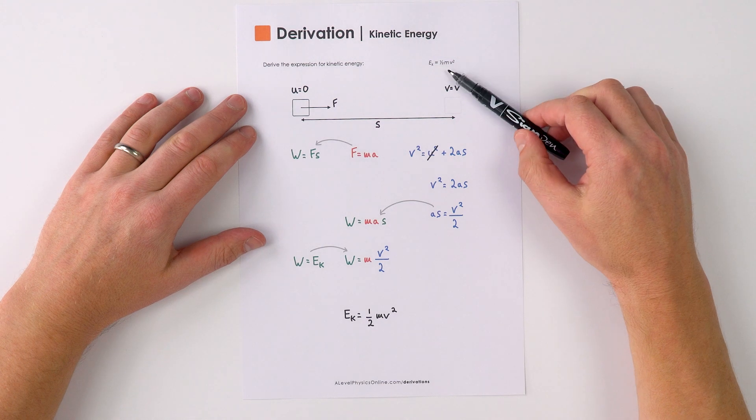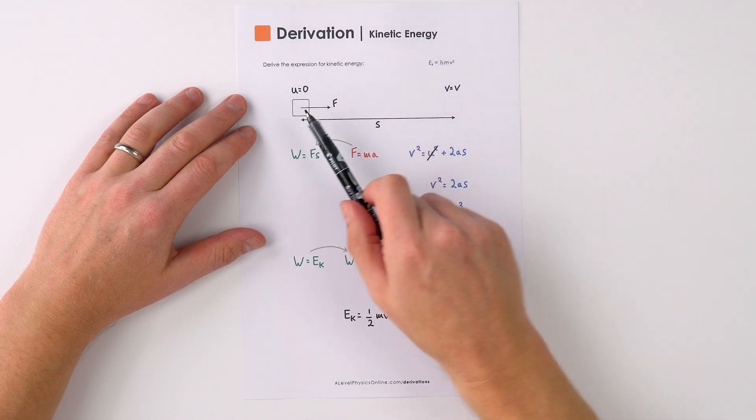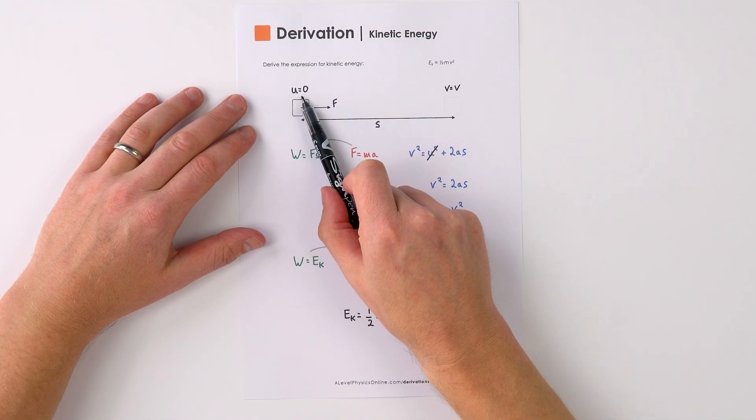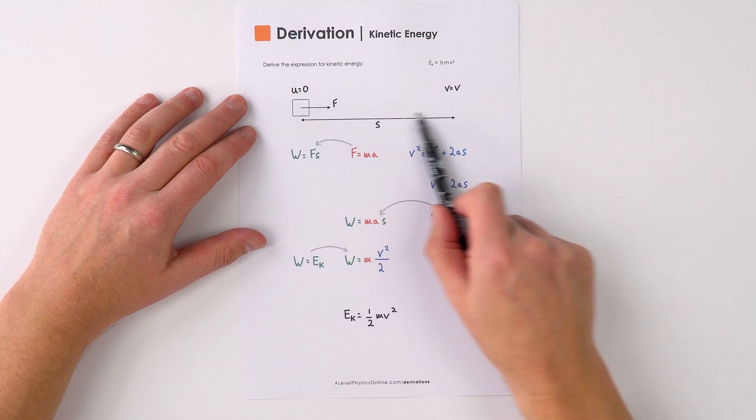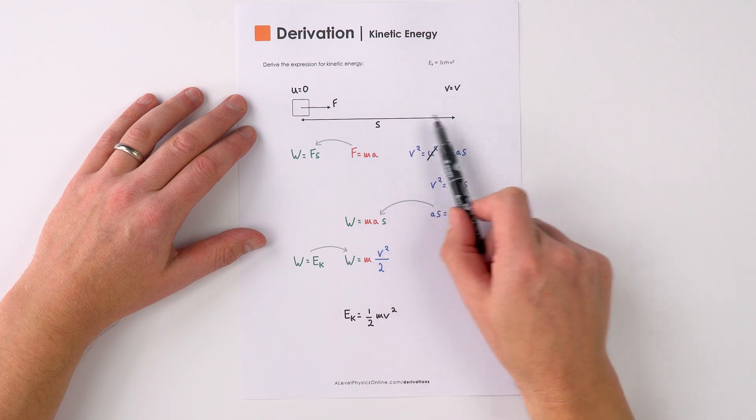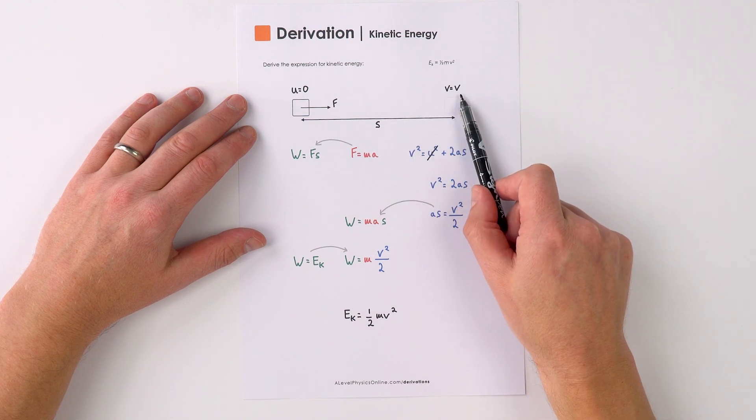This is how to quickly derive the formula for kinetic energy. Now imagine we had an object which initially was at rest, and we apply a resultant force F to it over a distance or a displacement of S until it gets to a final velocity of V.